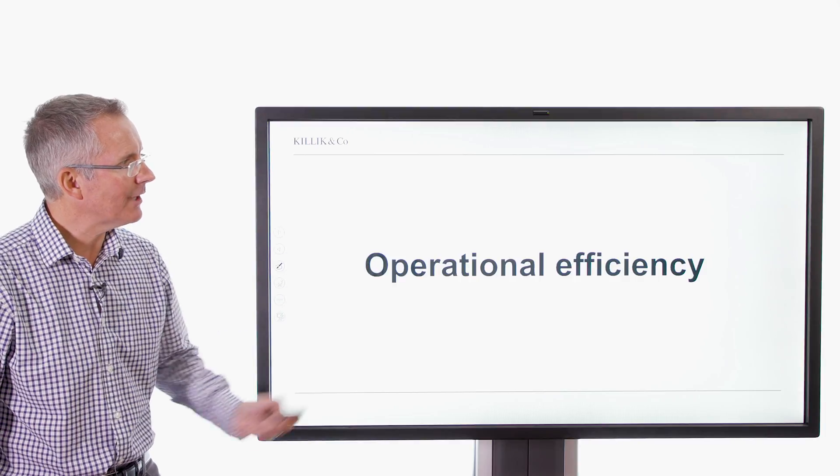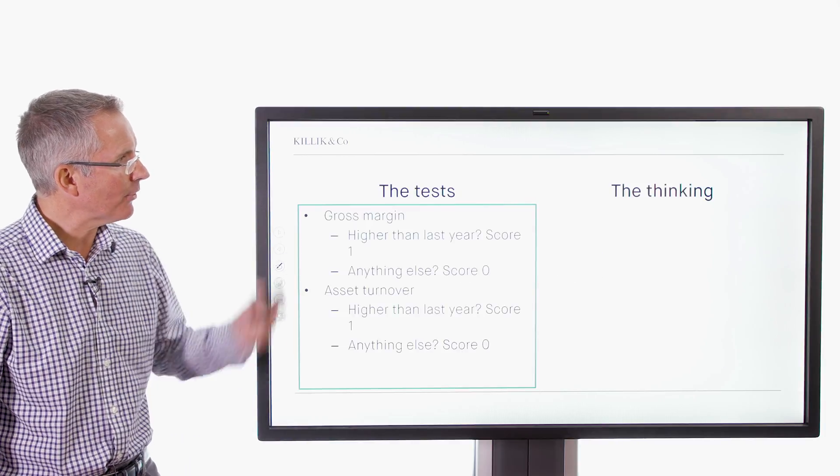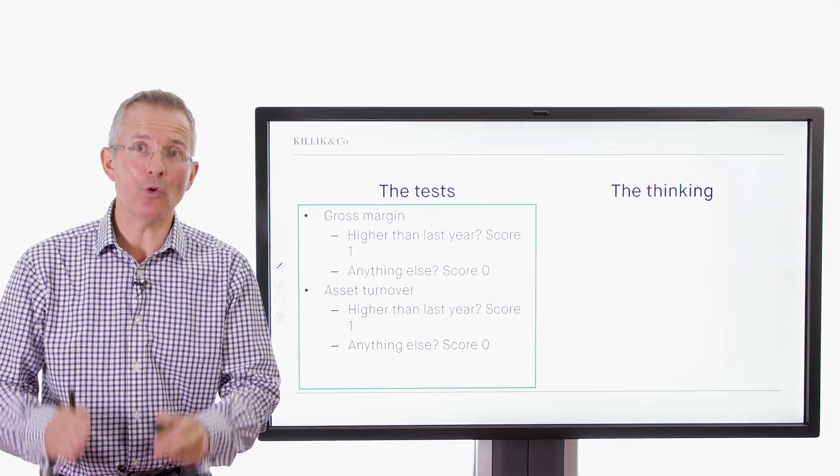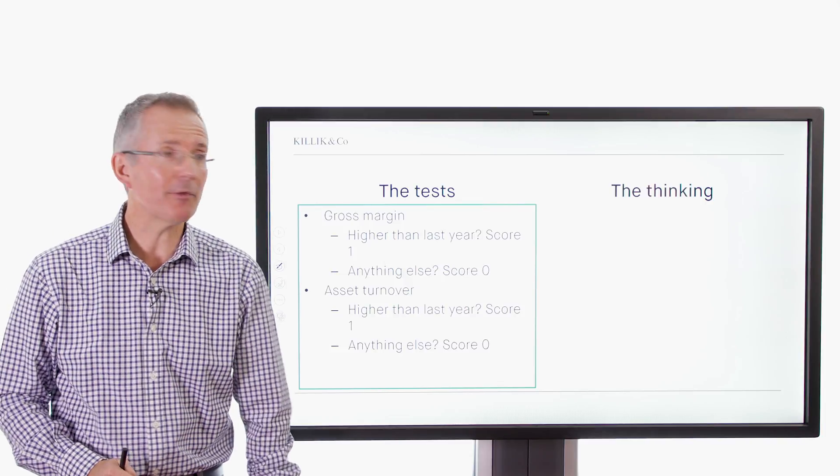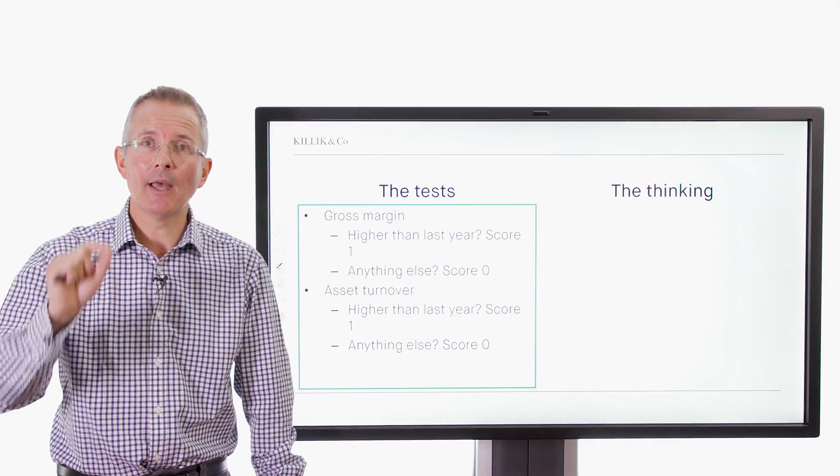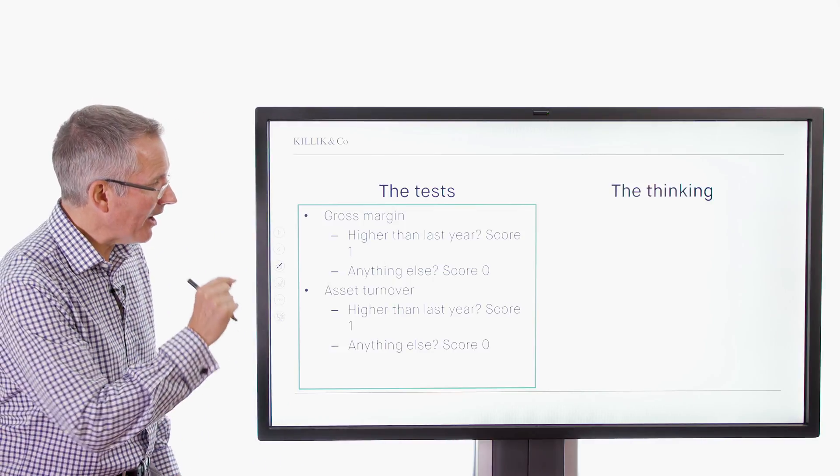And then finally, operational efficiency. And here, Piotroski suggests you look at gross margin, and there are plenty of observers in the market who like gross margin. Terry Smith at Fundsmith, for example. Simple test. Higher than last year, scores you one point. Anything else doesn't.